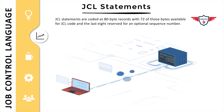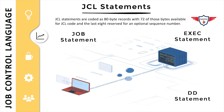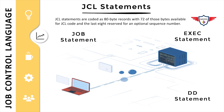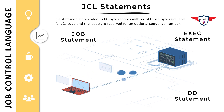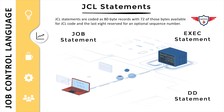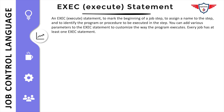There are three different types of job control statements. The first is the job statement or job card. The second is the EXE statement or execute statement. The third is the DD statement.